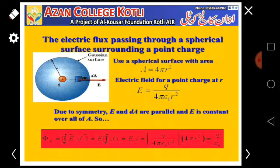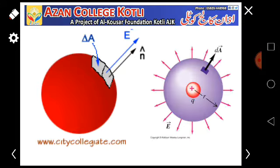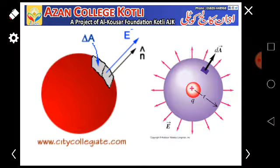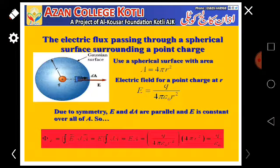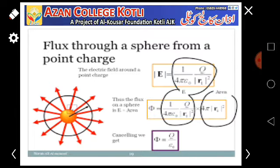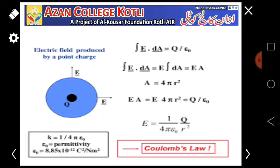Now moving forward: due to symmetry, E and dA are parallel and E is constant. By symmetry, E and A are parallel to each other — we have already shown that E and A are parallel. When E and A are parallel, the angle between them becomes zero degrees. We start the calculation and see what values come out. The value of E is 1/(4πε₀) times q/r².